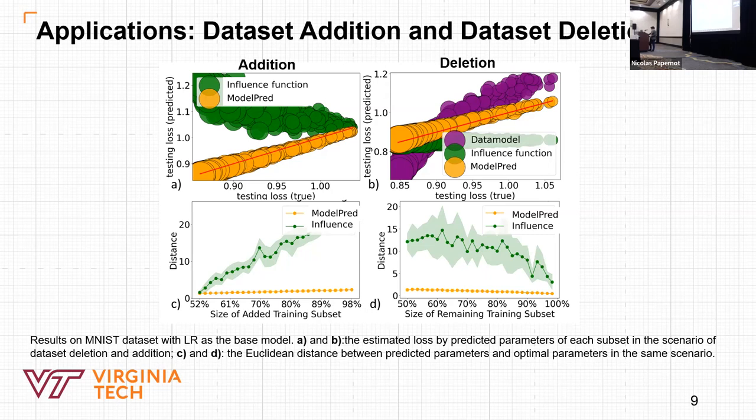We show the applications on dataset addition and deletion. Here are results on the MNIST dataset. The upper two figures show the predicted loss - the size of each point is proportional to the size of the subset. In dataset addition, we include unseen new points. The lower two figures show the Euclidean distance. It clearly demonstrates that Model Parade can consistently make accurate predictions on model parameters and utility. If we look into the result of influence function, we can see it can make accurate approximation when there is a small scale of change, but the error will grow rapidly with the scale of change. This also happens for DataModels, due to the limitation of first-order Taylor expansion and linear approximation.